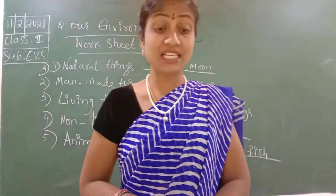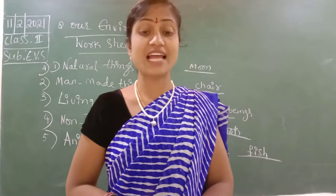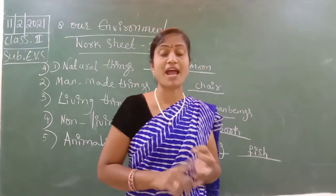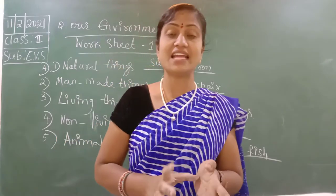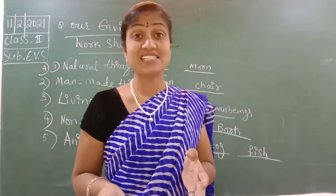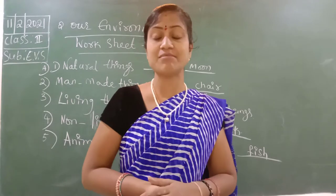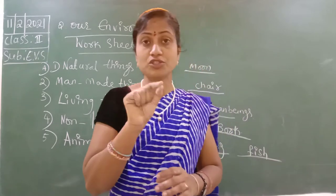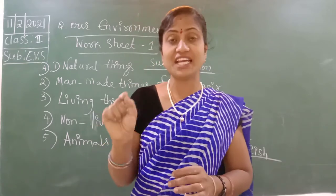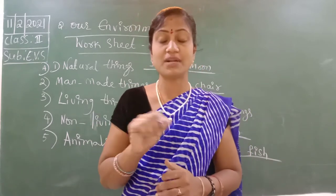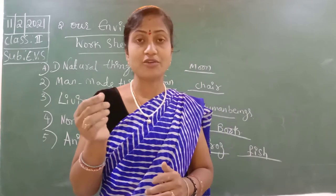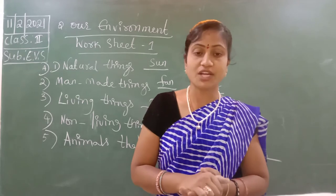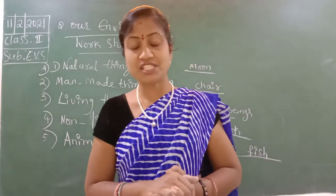Okay next, B-bit. What is the B-bit? Colour the clouds green that have names of living things. Here there are living things, non-living things, man-made things, human beings, plants, animals, and some different mixed names given. Just we have to find out which are the living things and apply the colour green. So take green crayons or colour pencils.